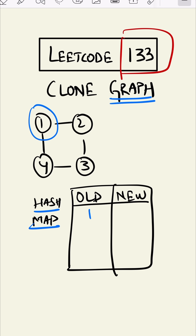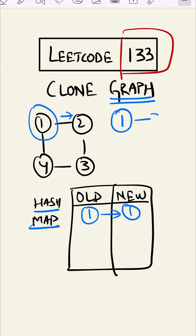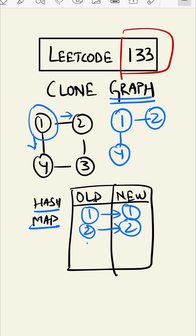We'll go to node one. Since one is not in our hash map, we will create a node one and add that value into our hash map. We check the neighbors of one — the first neighbor is two. Since two is not in the hash map, we create a node two and add it. We also check neighbor four — since four is not there, we create a node four and add it.